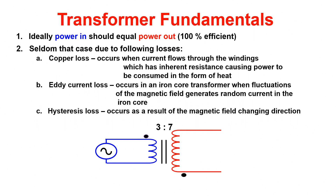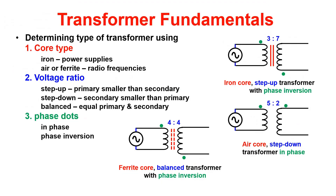Now for the fundamentals of a transformer. There are a few fundamentals to consider when determining the type of transformer in a circuit. First is the core type: iron cores are used in power supplies, whereas air core and ferrite transformers are used in radio frequency circuits.